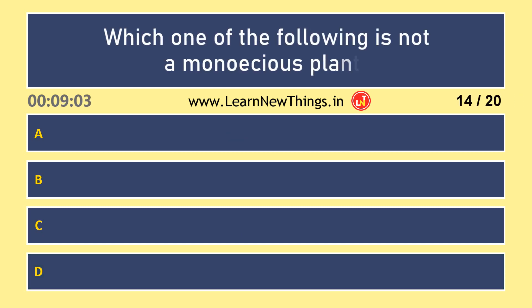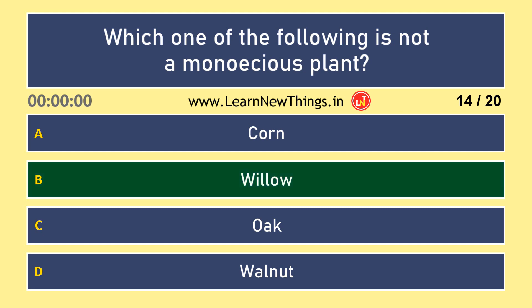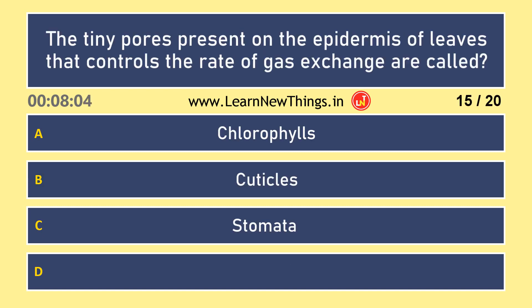Which one of the following is not a monoecious plant? Epidermis of leaves that controls the rate of gas exchange are called stomata.